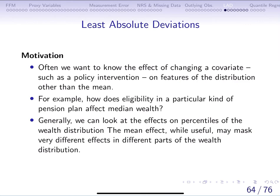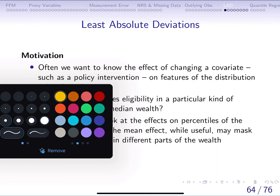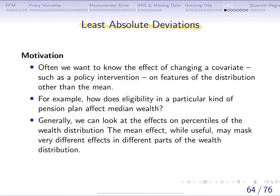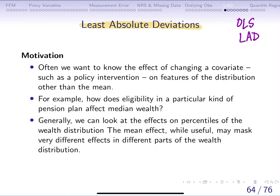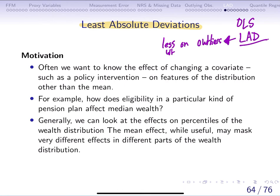This method is called the least absolute deviation method. Just like OLS is a method, least absolute deviation is also a method, and it has an advantage because it puts less weight on outliers in determining the effect of X on Y.